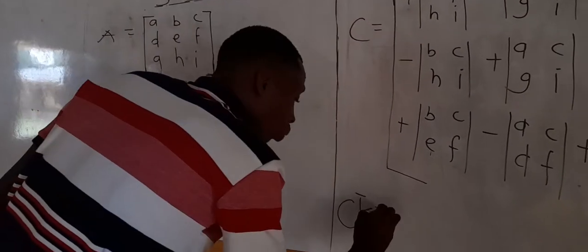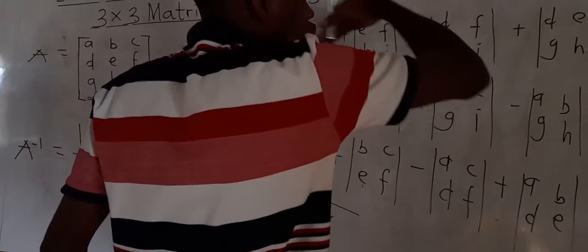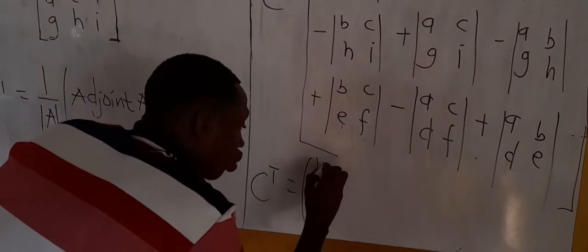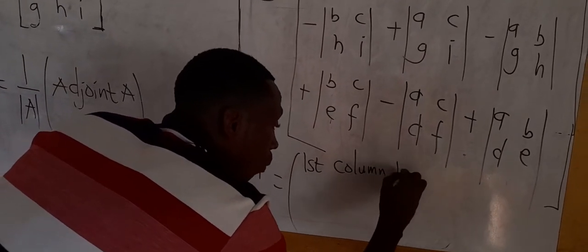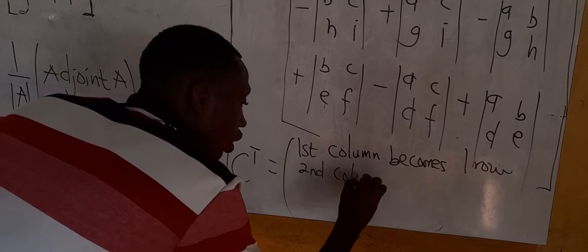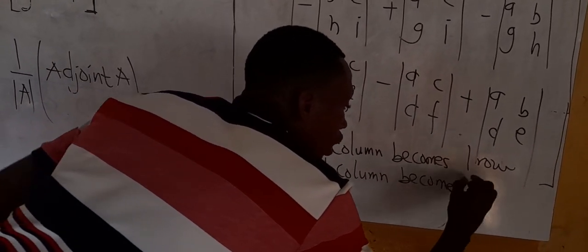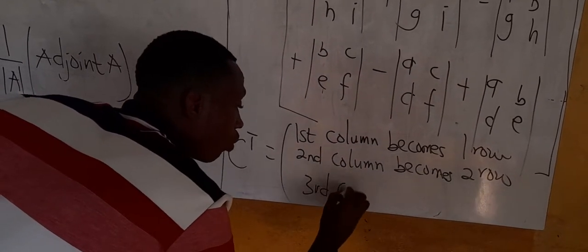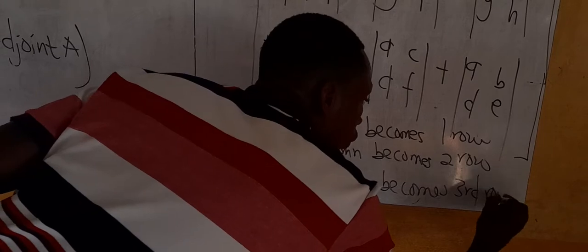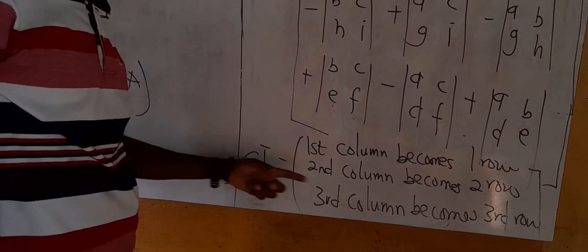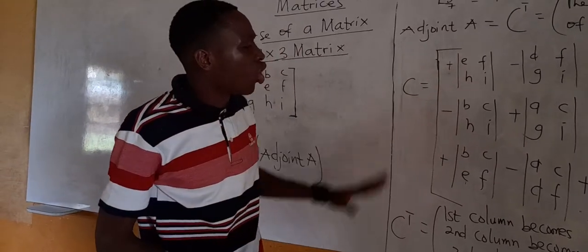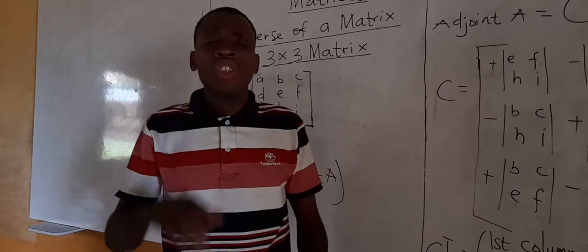The transpose of the cofactors means the first column becomes the first row, the second column becomes the second row, and the third column becomes the third row. This becomes the transpose of the cofactors, which is the adjoint. It is very tricky, so please take your time and solve a sample question to get the concept.